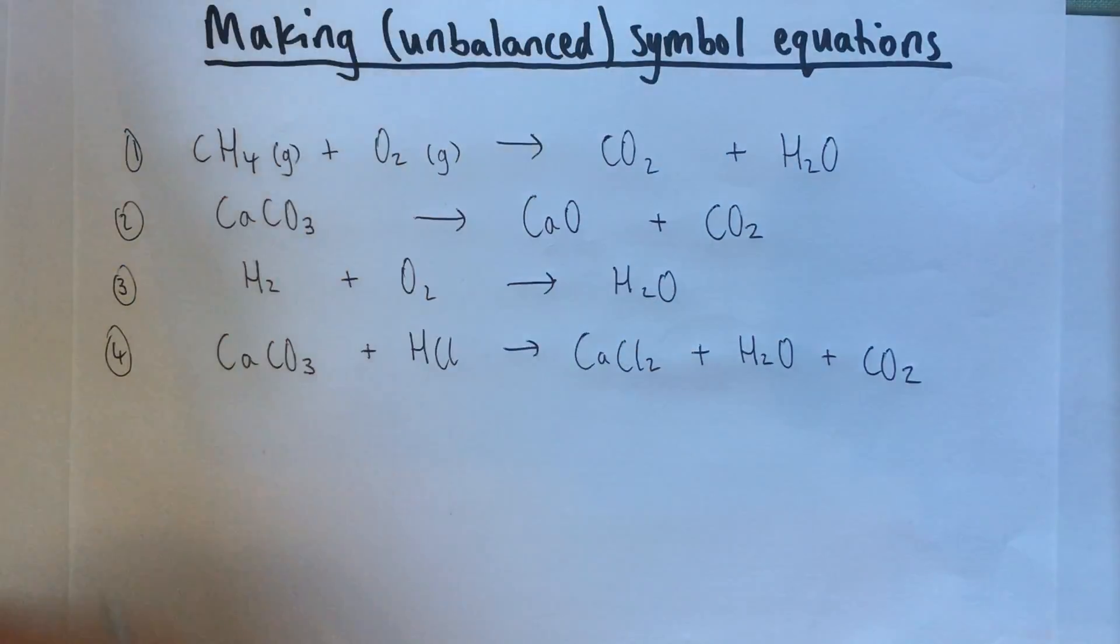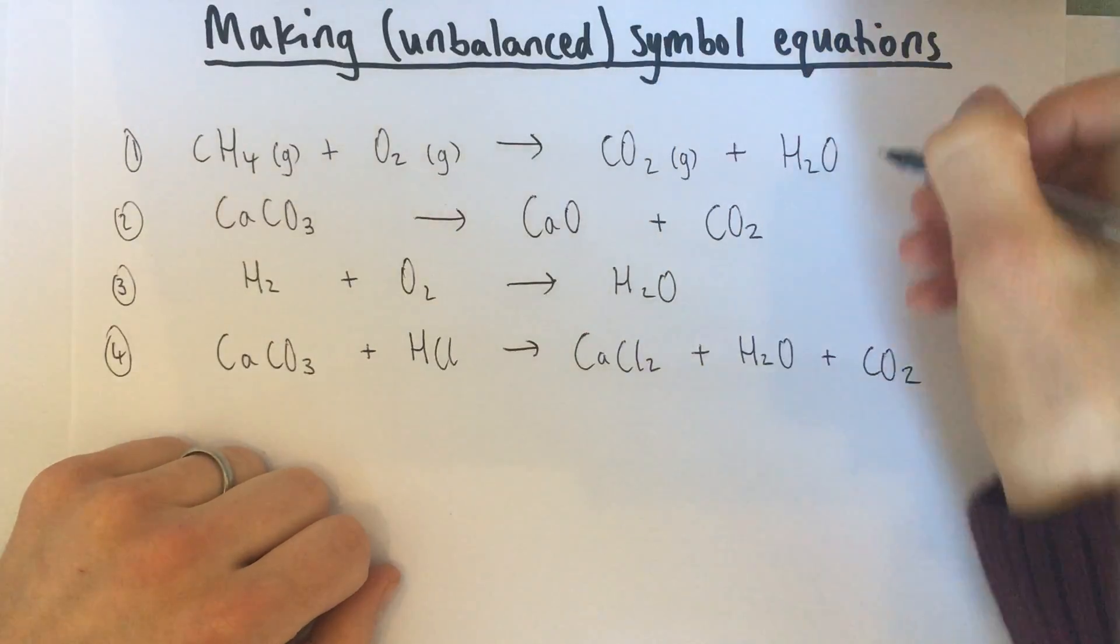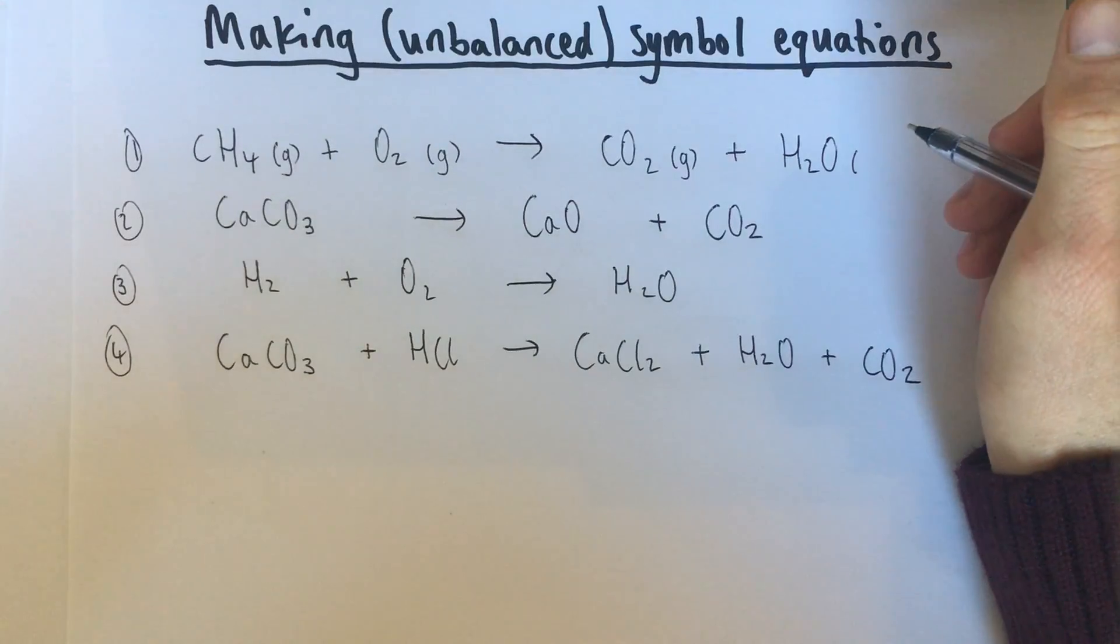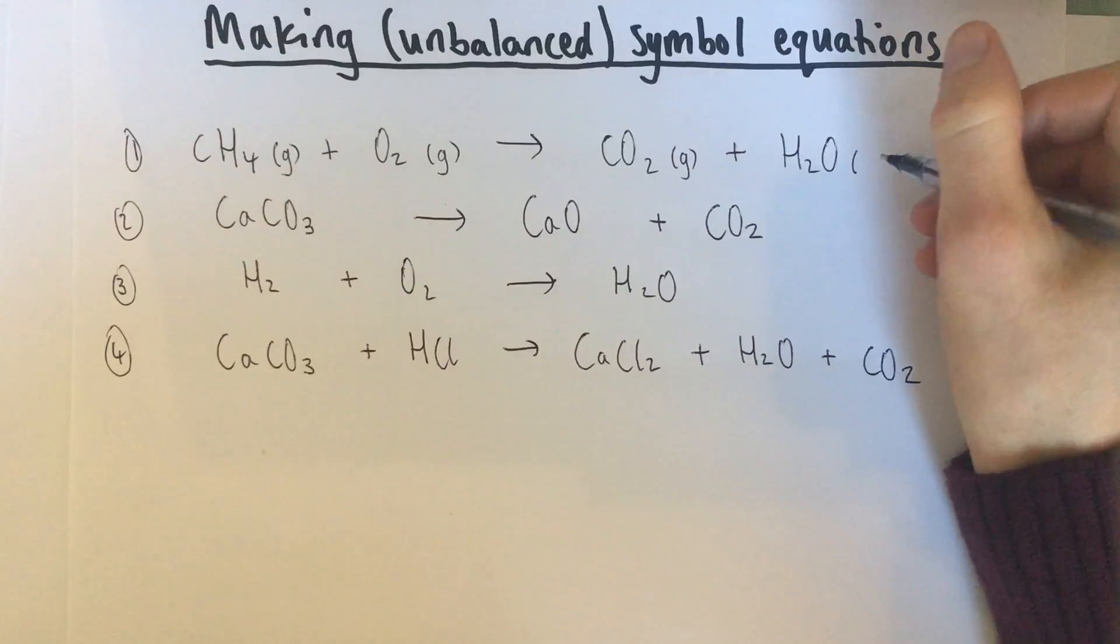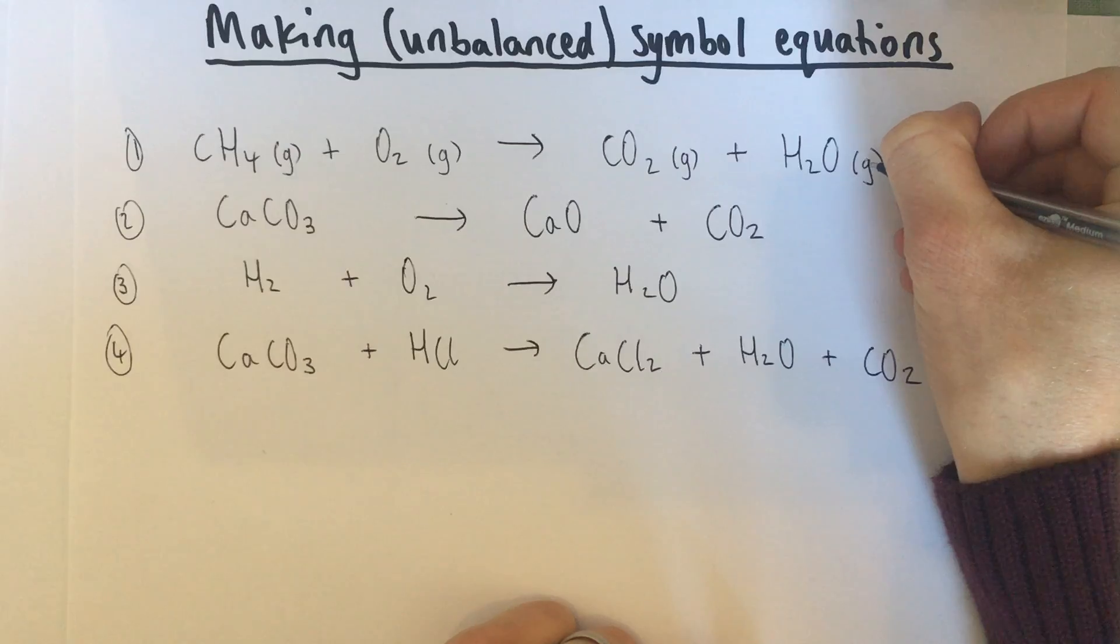When those two react together in a Bunsen burner, they give off carbon dioxide. We know that's a gas. And water. Be careful with this one. When we have a Bunsen burner going, we don't see liquid water pouring out of it. It's because it's so hot in that reaction. The water that you're forming is a gas. It's steam. So that's going to get a lowercase g as well.